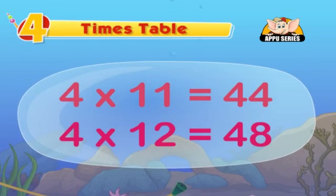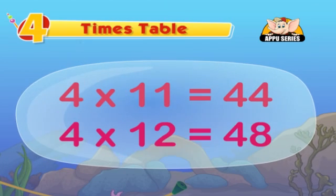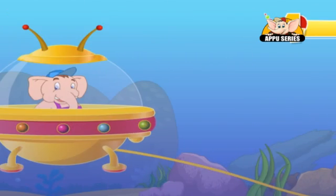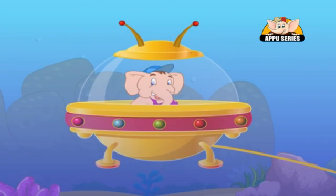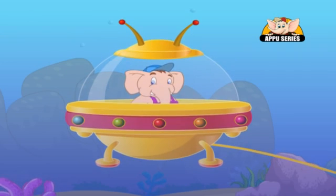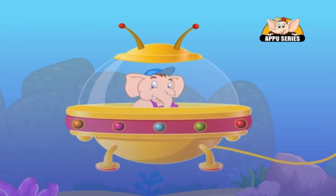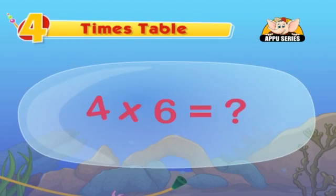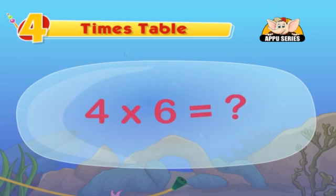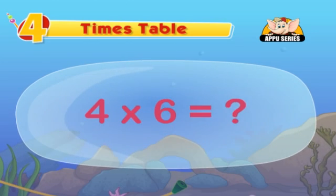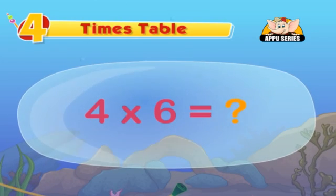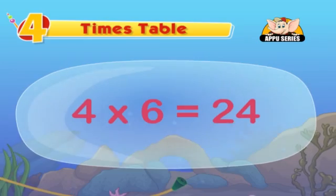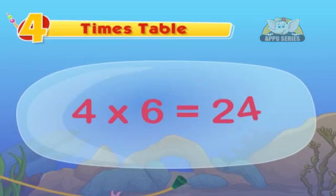And that's the end of the table story. Wow! Superb! The 4's table is to double the double. So, what is 4 into 6 equal to? Yes, it's 24.